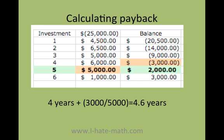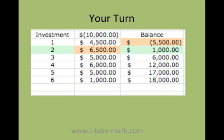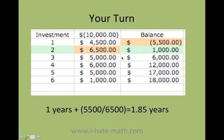Let's do another example. Now let's say that you have ten thousand dollars to invest in the best invention — how to cure the common cold. I will definitely buy that today! So the first year you get four thousand five hundred again; you do your balance. But look, on the second year it seems like you already got your investment back since this is a great invention. So that means my payback is going to be one year, and then I do the difference: five thousand five hundred over six thousand five hundred, and that gives you the fractional portion of the time.